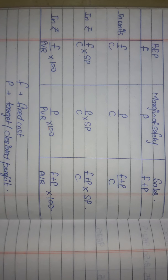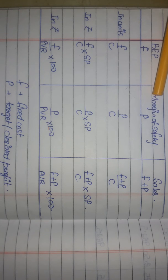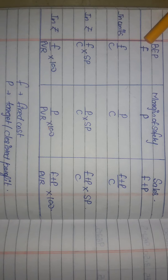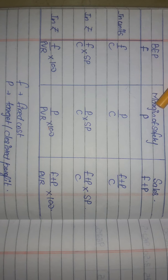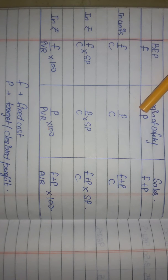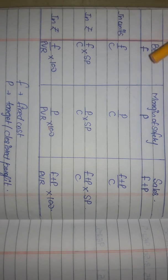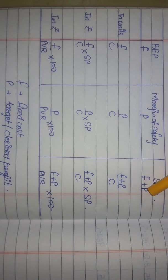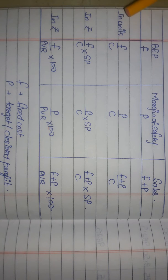For calculating BEP, margin of safety, and sales in units: write F (fixed cost) for BEP, P (desired or targeted profit) for margin of safety, and F + P (fixed cost plus desired profit) for sales. To get each in units, divide by contribution per unit. So BEP in units = F ÷ contribution per unit; margin of safety in units = P ÷ contribution per unit; sales in units = (F + P) ÷ contribution per unit.